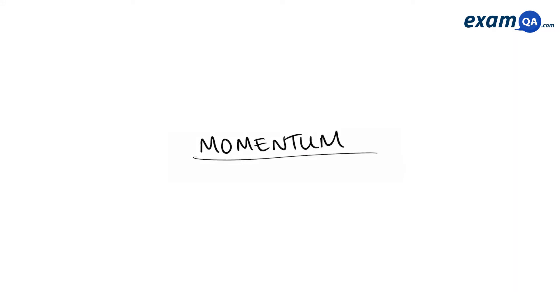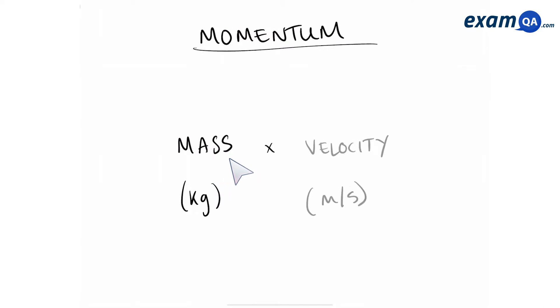In this video we're going to be talking about momentum. If an object has mass and velocity, then that object has momentum. Since mass is measured in kilograms and velocity is measured in meters per second, that means that the units of momentum is kilograms times meters per second, and you can write it like this.